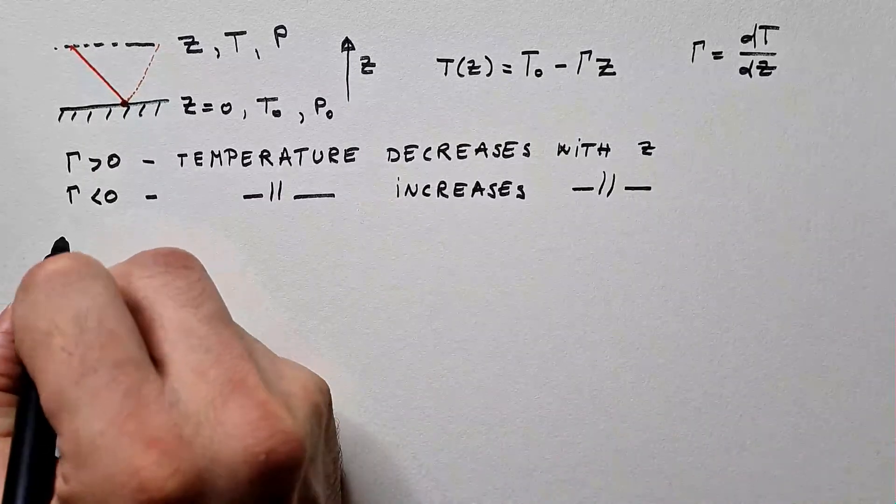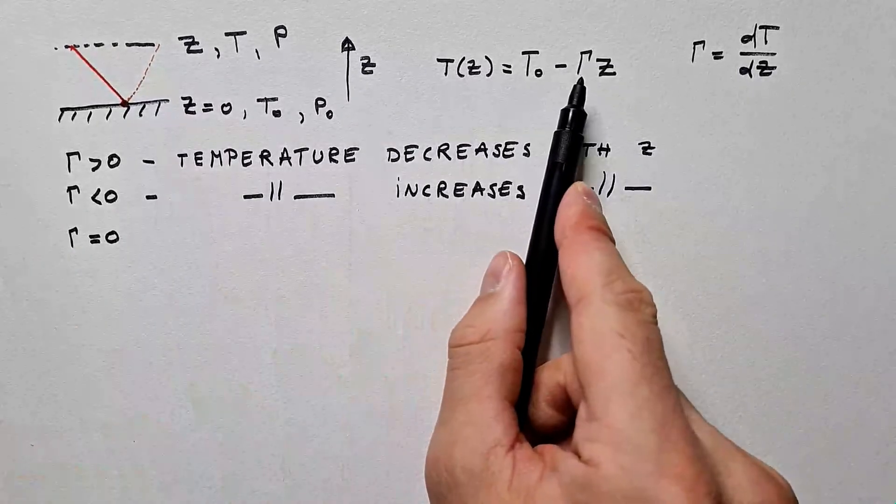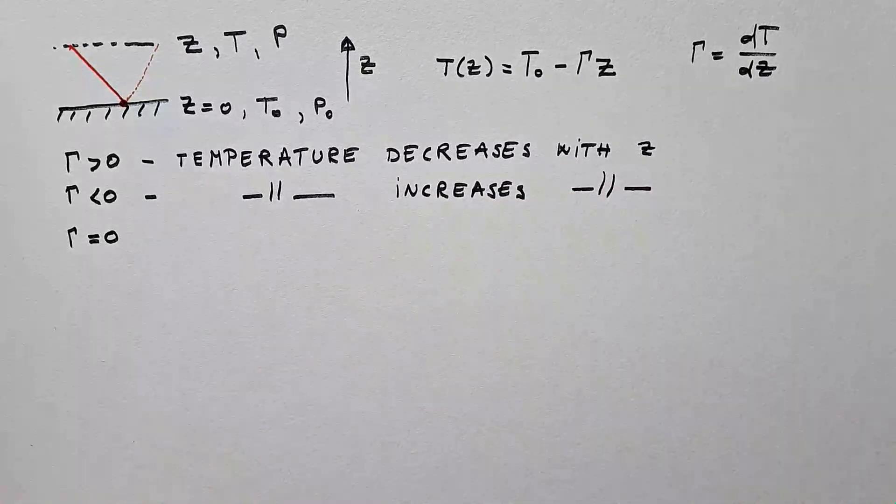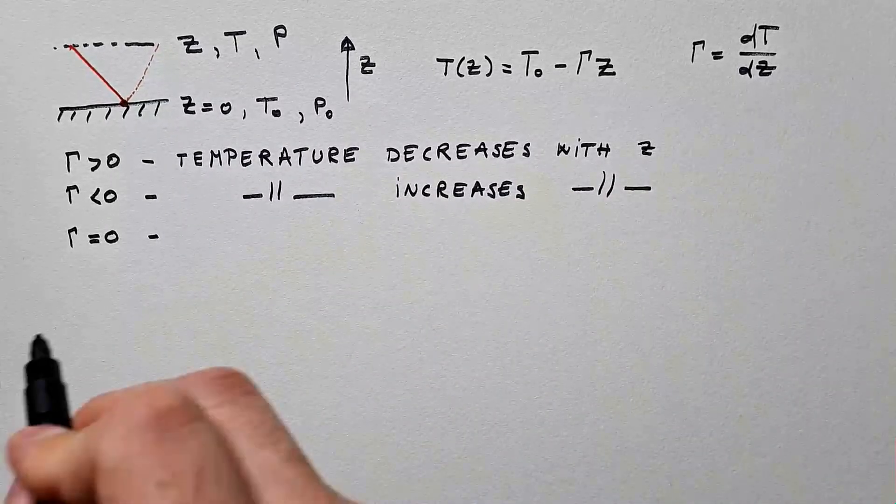If γ is less than 0, then temperature will actually increase with altitude. And finally, if γ is equal to 0, then temperature does not depend on height, and we have isothermal atmosphere, which we covered in one of my previous videos.